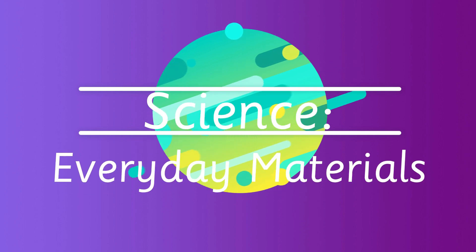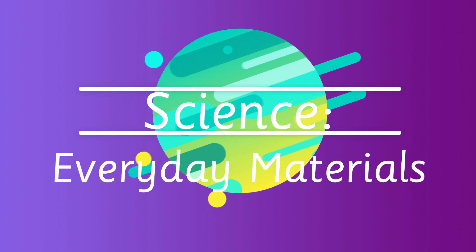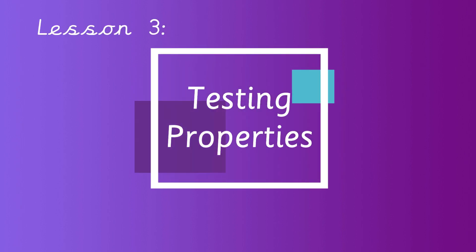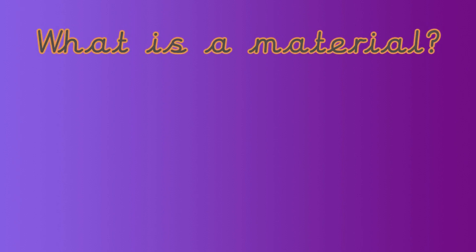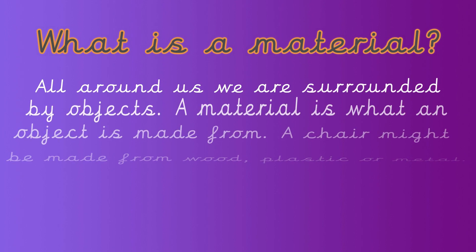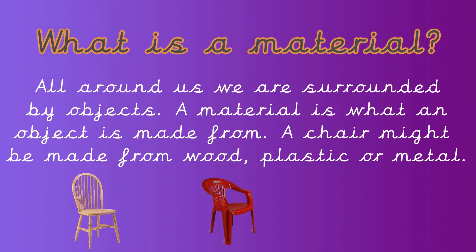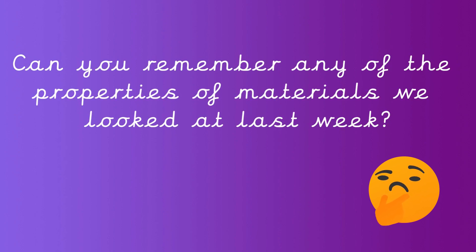Science everyday materials, lesson three: testing properties. Can you remember what a material is? If you look all around you, we are surrounded by objects. A material is what an object is made from. For example, a chair — it might be made from wood, plastic, or even metal. Can you remember any of the properties of materials we looked at last week?